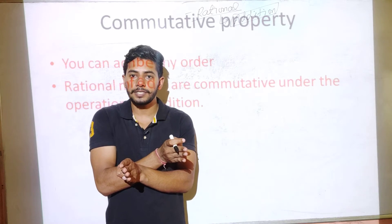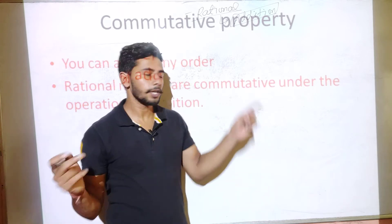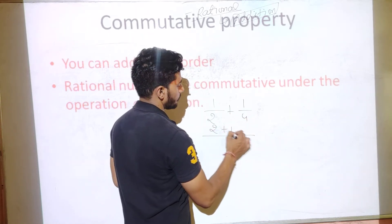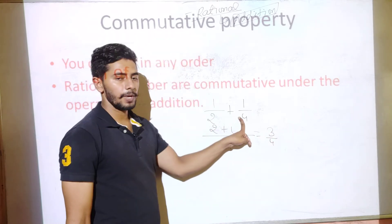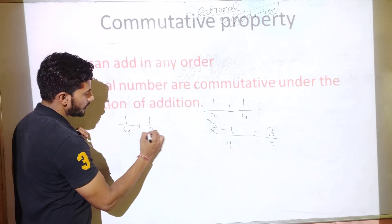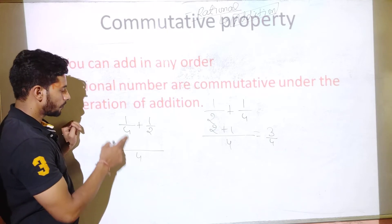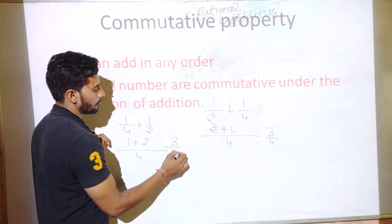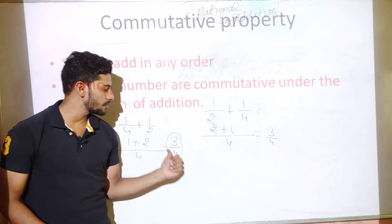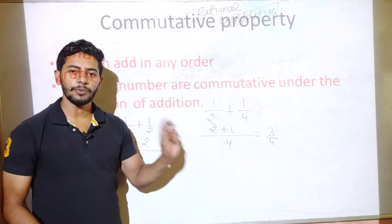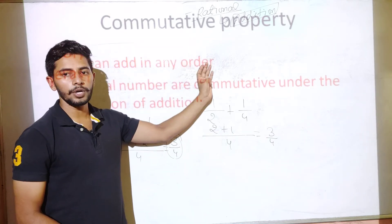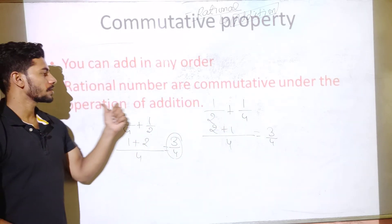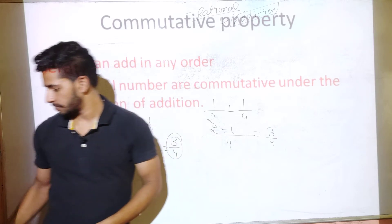If the order of two numbers is changed and the answer does not change, then the operation is commutative; otherwise it is not. For addition, let's take two numbers: 1/2 + 1/4. The LCM is 4, so we get 2/4 + 1/4 = 3/4. Now if we do 1/4 + 1/2, the LCM is again 4, giving 1/4 + 2/4 = 3/4. Both give the same answer, so rational numbers are commutative under the operation of addition.